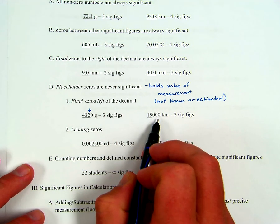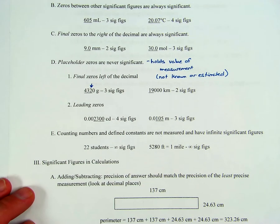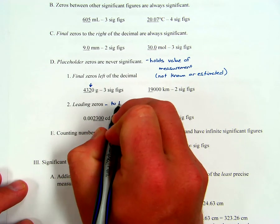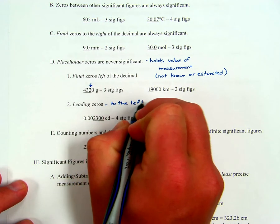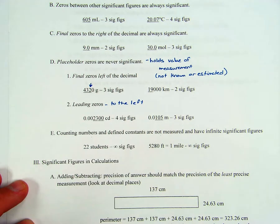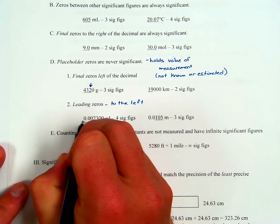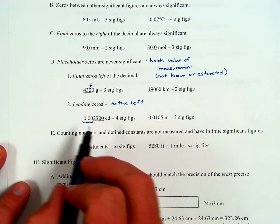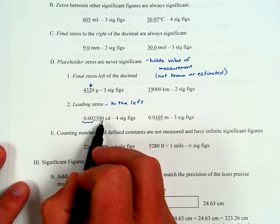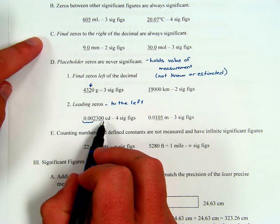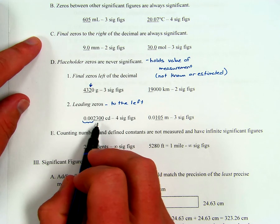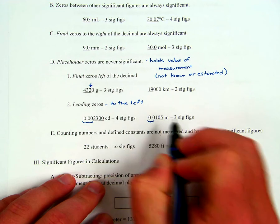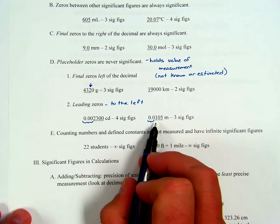The other type of placeholder zeros are leading zeros — zeros to the left of the first non-zero digit. Any zeros to the left of the first non-zero are never ever significant. So for 0.00720, those first three zeros are never significant; the three sig figs are the 7, 2, and the final zero, which is significant as a trailing zero after the decimal. Similarly, leading zeros in 0.0392 are not significant, giving three sig figs.